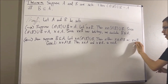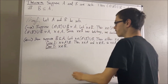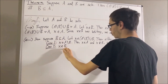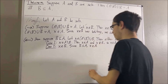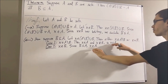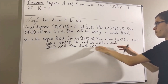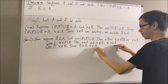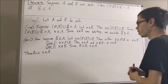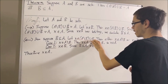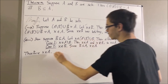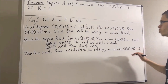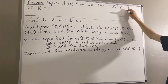Now let's move on to case 2, where X is an element of B. Well, since B is a subset of A, we know that everything in B is also in A. So since X is an element of B, we have that X is an element of A — and that's exactly what we wanted to prove. So in either case, we have that X is an element of A. It follows that X is an element of A. Since X was an arbitrary element of this set, everything in the union of A set minus B and B is also in A.